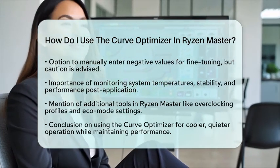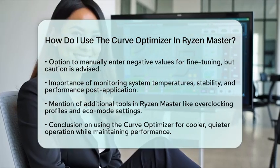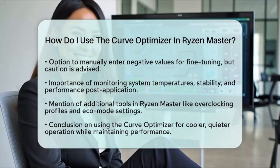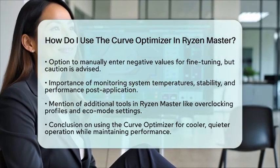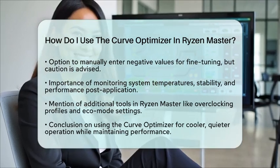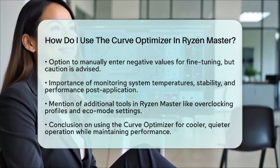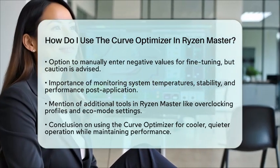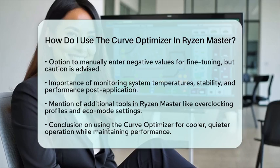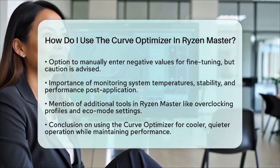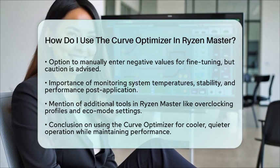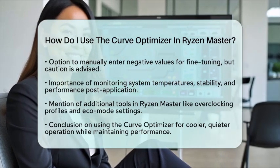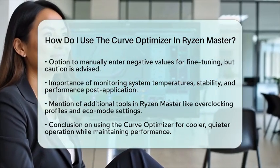Using the Curve Optimizer is a practical way to improve CPU efficiency, especially for Ryzen 5000, 7000, and 9000 series processors. In addition to the Curve Optimizer, Ryzen Master offers other tools like overclocking profiles and eco-mode settings for various workloads. This feature is particularly useful for users who want to optimize their CPU's thermal and power characteristics without manually adjusting voltages and frequencies. By following these steps, you can effectively use the Curve Optimizer to achieve cooler and potentially quieter operation while maintaining or even improving performance.